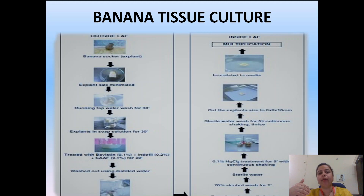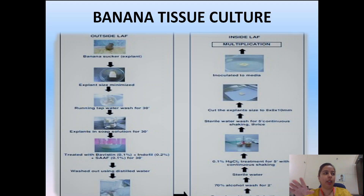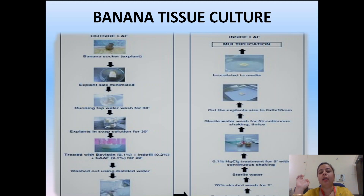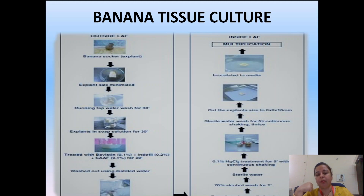After 30 minutes, take it out and wash it using distilled water. The explant is now ready and we go into the laminar airflow cabinet — class 100 chamber — where we transfer the explant to a sterile bottle. The sterile bottle is sterilized using autoclave. Then wash the explant for two minutes in 70% alcohol, followed by a final wash with sterile water. Next, 0.1% mercuric chloride is applied to the explant with continuous shaking for five minutes.